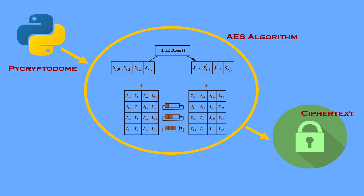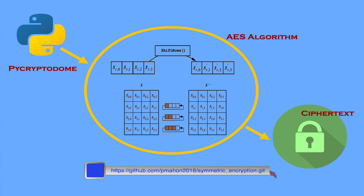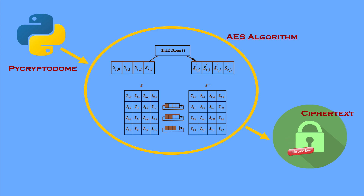That's it for the basics on pycryptodome with AES. You can do much more with these libraries, but this video should give you a solid understanding of the main components. You can find the code used here on my GitHub site. Don't forget to check out my other videos on encryption, and if you enjoyed this video please like, share, and subscribe. Thanks again for watching and I'll talk to you soon.